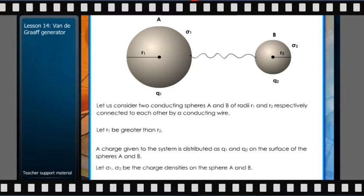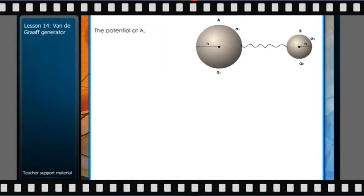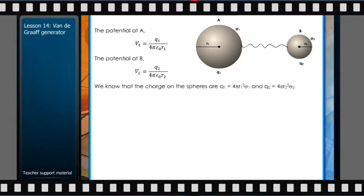Let sigma1 and sigma2 be the charge densities on spheres A and B. The potential at A is V = Q1/(4πε₀R1). The potential at B is V = Q2/(4πε₀R2). We know that the charge on the spheres are Q1 = 4πR1²σ1 and Q2 = 4πR2²σ2.